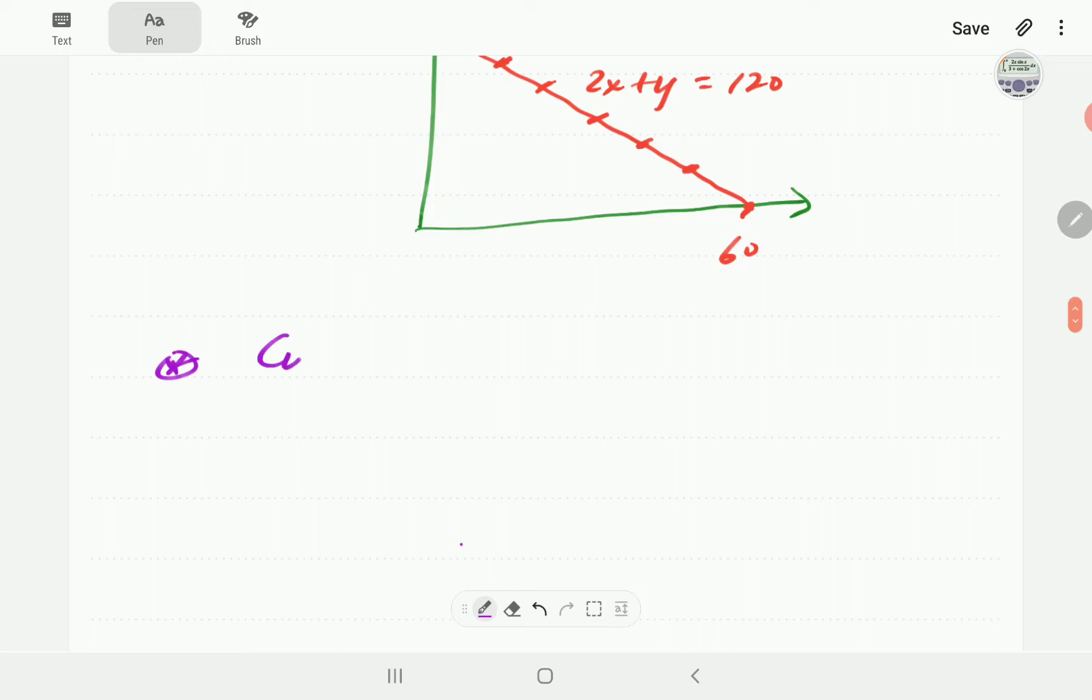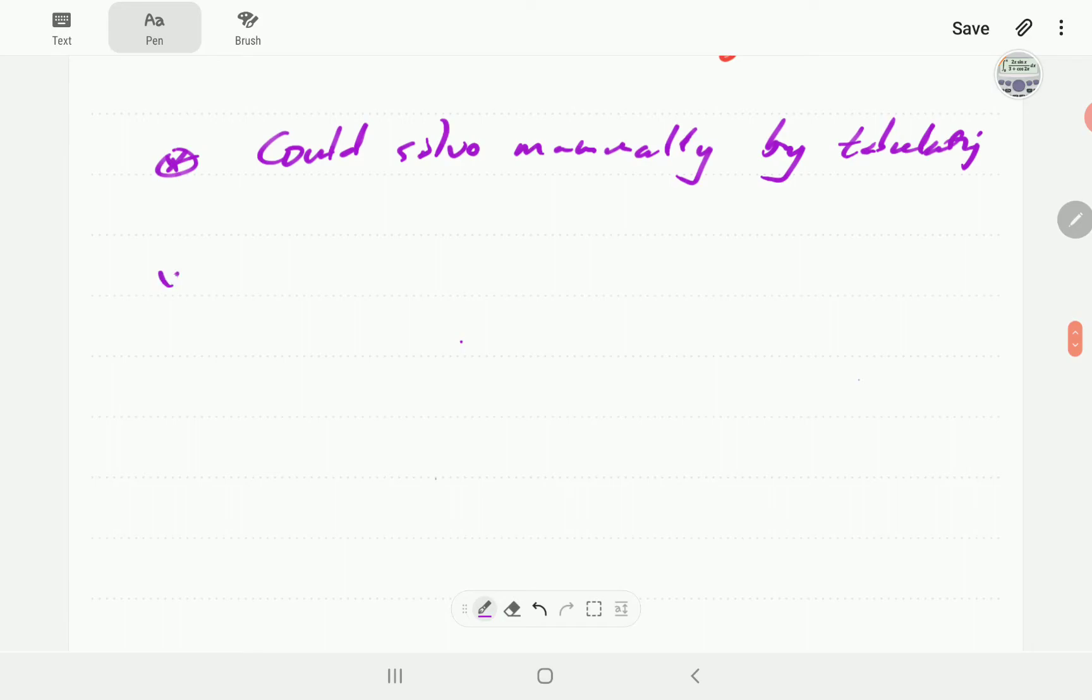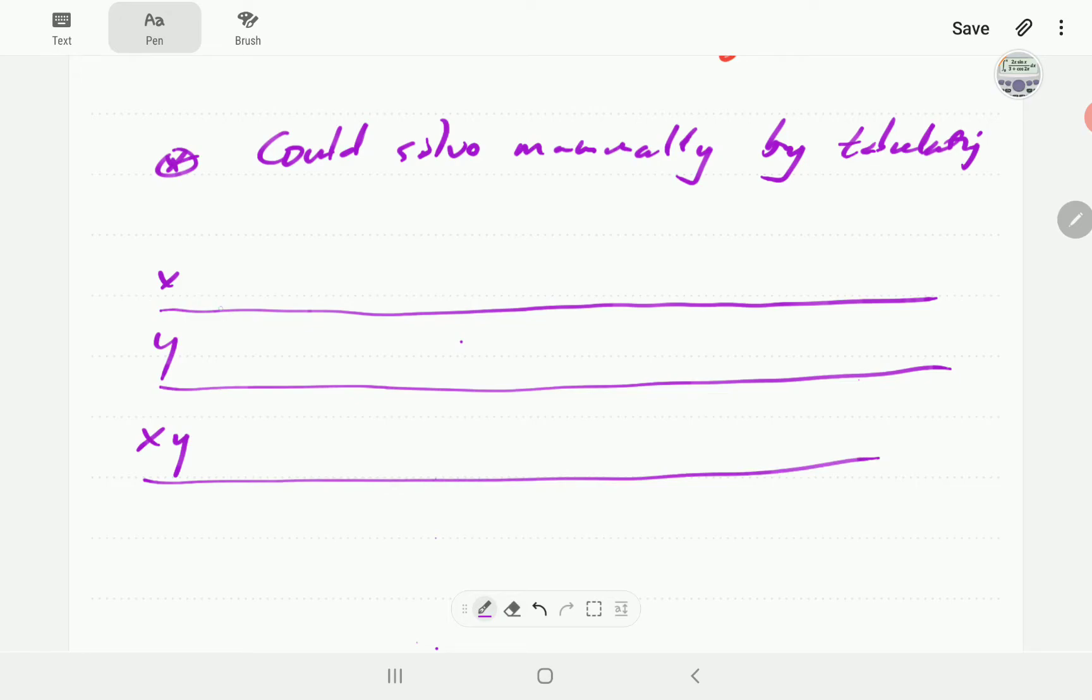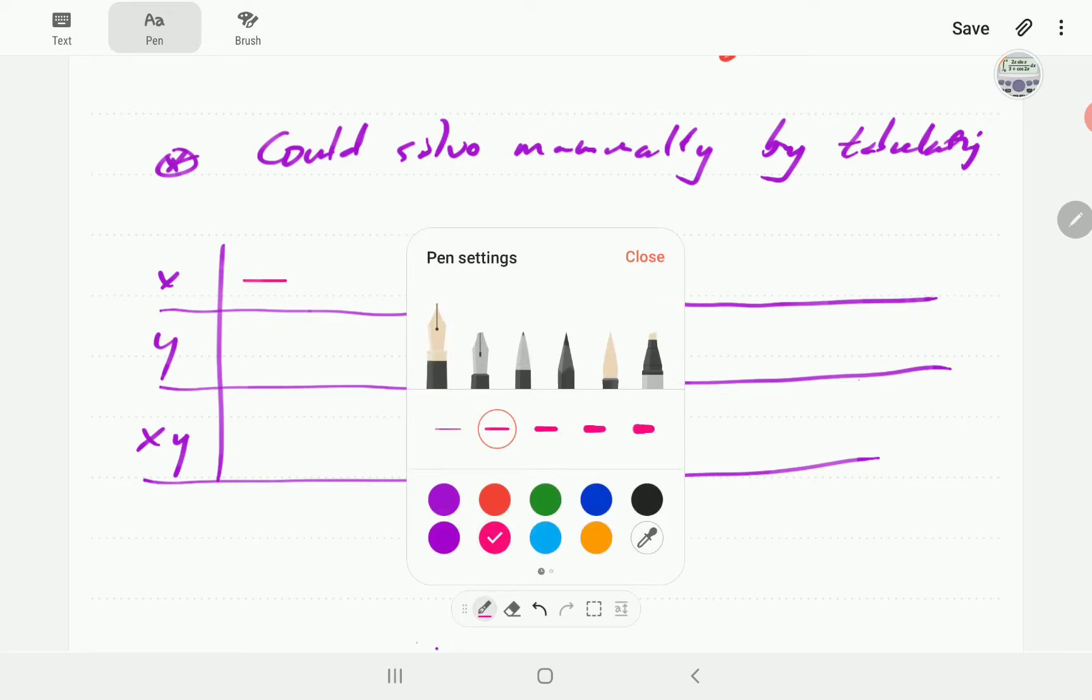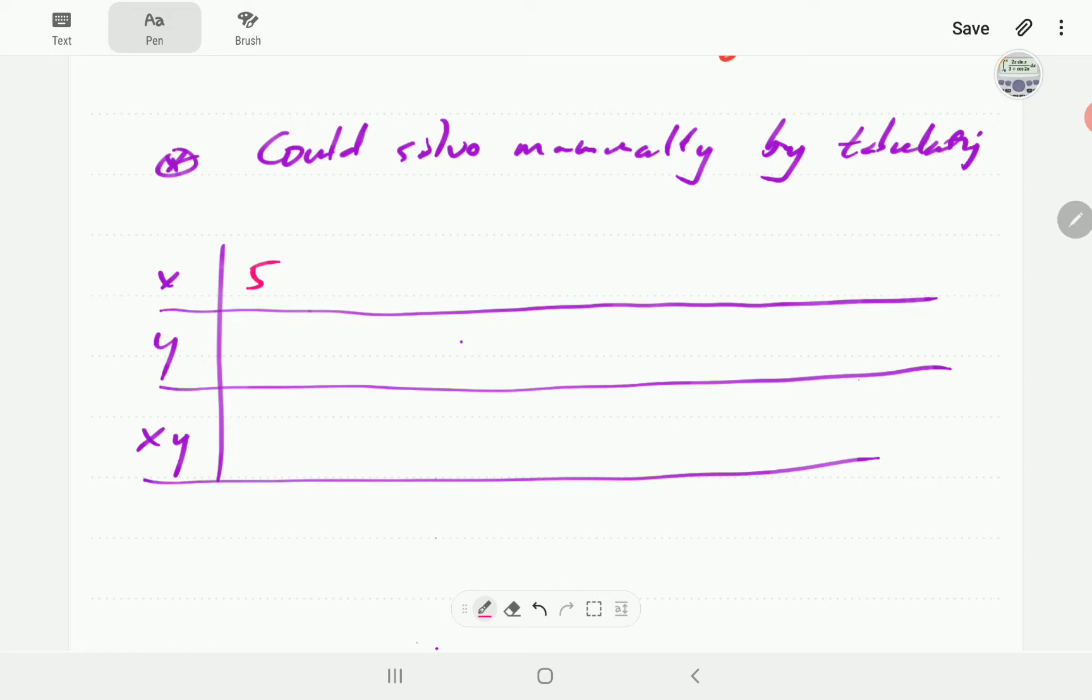As we try to find the biggest possible values of x and y, the values that qualify can only be on this line. So that is our constraint in this problem. Now this problem we could solve by manually tabulating the values. So we could solve manually by tabulating.